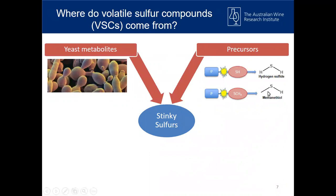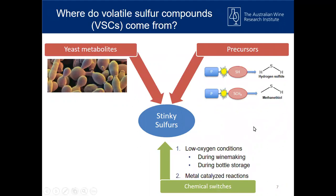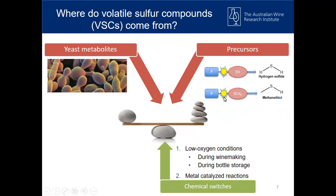If we look at the possible chemical switches and chemical drivers, we can look at low oxygen conditions — both during winemaking and during bottle storage. Another important factor is the amount of residual metals present in our wines, because metals such as copper, iron, aluminium, and zinc can act as catalysts and chemical switches to release sulfur moieties from precursor compounds. So it's really a balance of three factors: what is produced during fermentation, the precursors present in your wine, and the chemical switches that will determine whether your wine goes reductive.